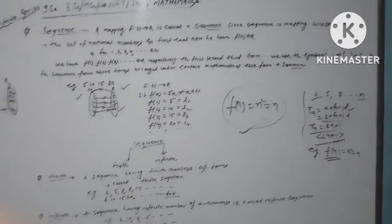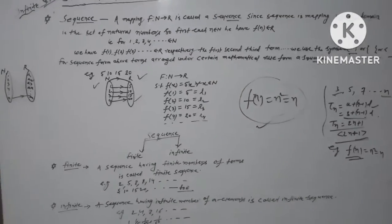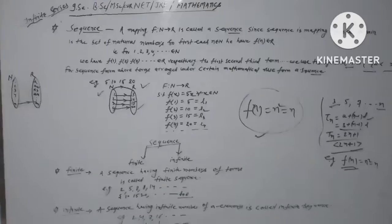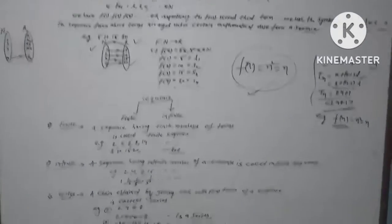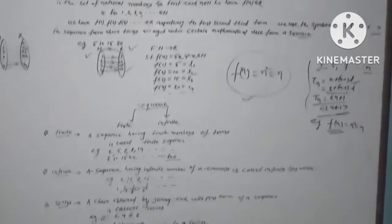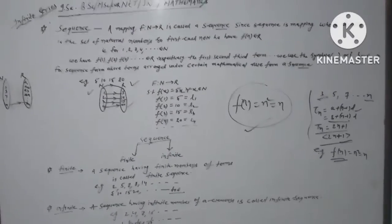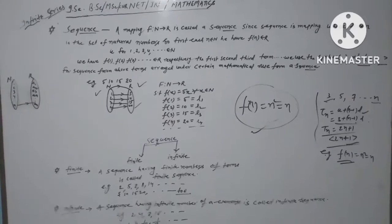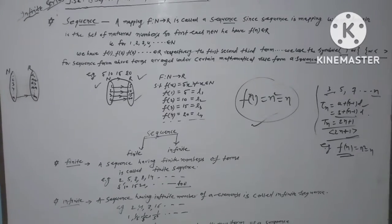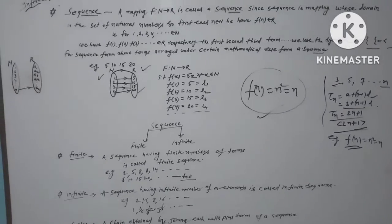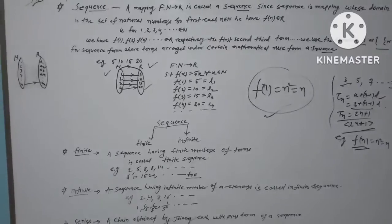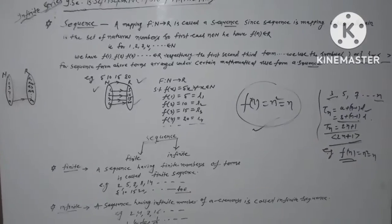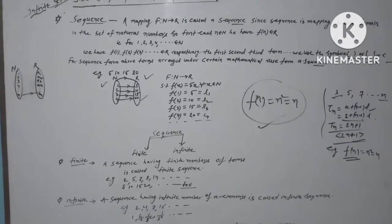I hope you can understand. Once again, sequence: a mapping F such that n tends to R, is called a sequence. Since sequence is a mapping whose domain is the set of natural numbers, for each n belonging to N we have F(n) belongs to real number R. I hope you understand the basic definitions of sequence and series. Thanks.